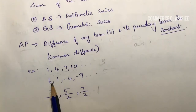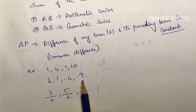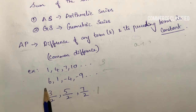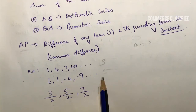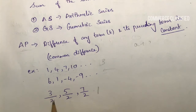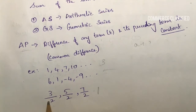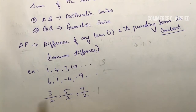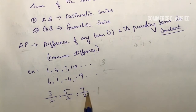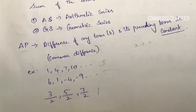Second example: the sequence 6, 1, minus 4, minus 9 has a common difference of minus 5. Another example involves fractions — 3 by 2 minus 5 by 2: 5 by 2 minus 3 by 2 gives numerator 5 minus 3 equals 2, divided by 2 equals 1. So the common difference is 1.